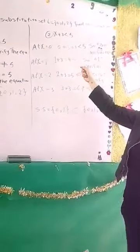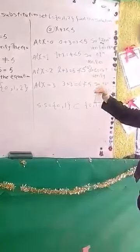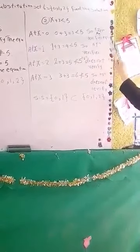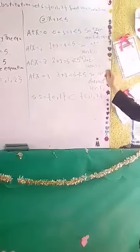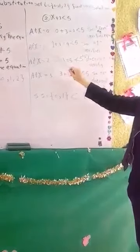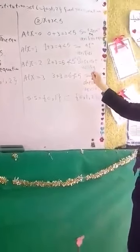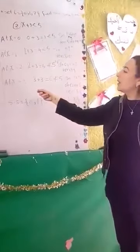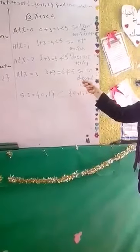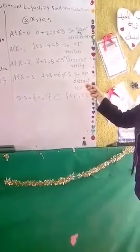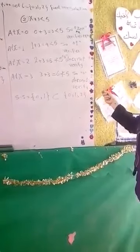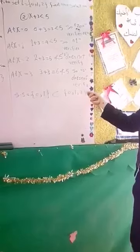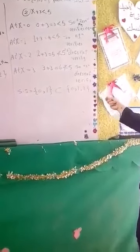The second one is an inequality: x plus 3 less than 5. At x equals 0: 0 plus 3 equals 3, which is less than 5, so 0 satisfies the inequality. At x equals 1: 1 plus 3 equals 4, which is less than 5, so 1 satisfies the inequality. At x equals 2: 2 plus 3 equals 5, which is not less than 5, so 2 does not satisfy the inequality. At x equals 3: 3 plus 3 equals 6, which is not less than 5, so 3 does not satisfy the inequality.